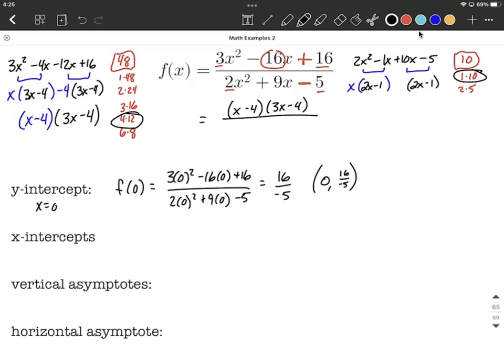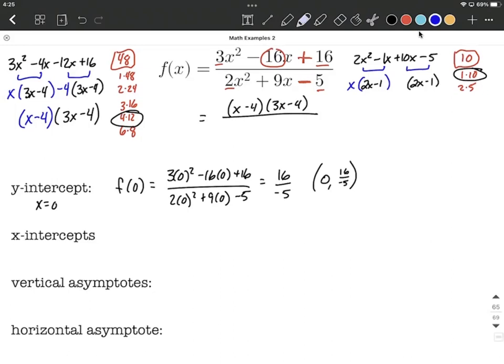The second pair of terms, the 10x minus 5, has a 5 in common, and we'll make it a positive 5. So positive 5 times 2x makes positive 10x, positive 5 times negative 1 makes negative 5 if we redistribute. What's out in front of the parentheses goes in one set, what's inside goes in the other set. So the denominator is x plus 5 times 2x minus 1.